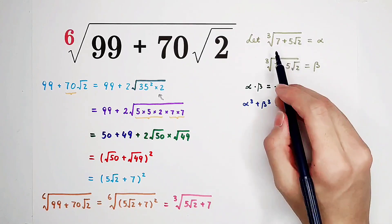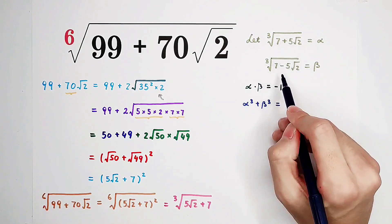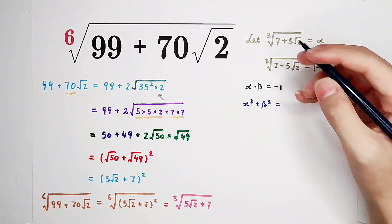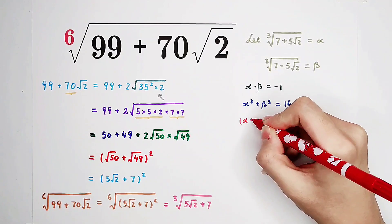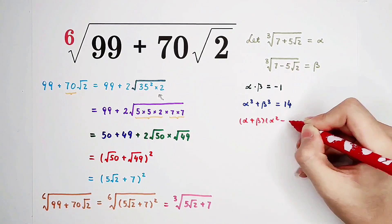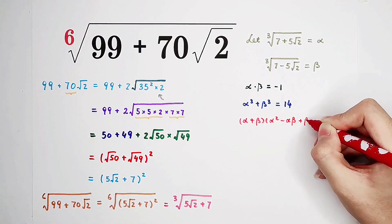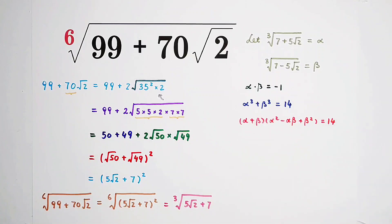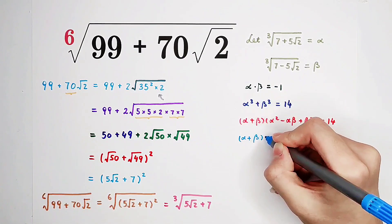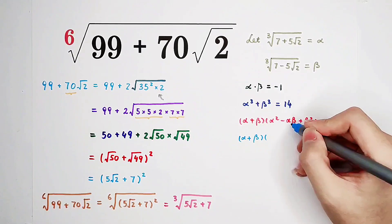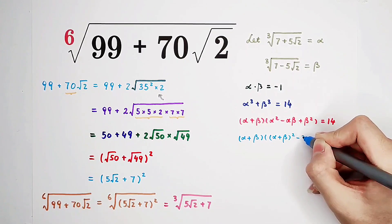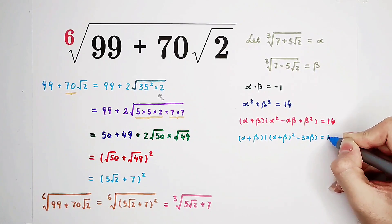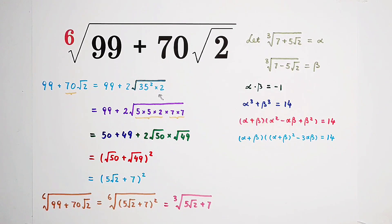Alpha cubed plus beta cubed is just (7 plus 5 root of 2) plus (7 minus 5 root of 2). The plus and minus 5 root of 2 cancel, so it is 2 times 7, which is 14. Then, we can solve for the value of alpha and beta. Alpha cubed plus beta cubed equals (alpha plus beta) times (alpha squared minus alpha times beta plus beta squared) equals 14. Then, alpha plus beta times (alpha plus beta squared minus 3 times alpha times beta) equals 14. Because we know alpha times beta is negative 1.